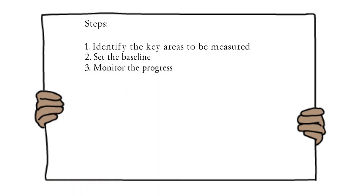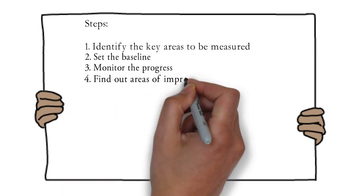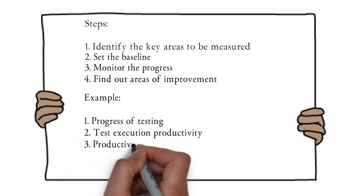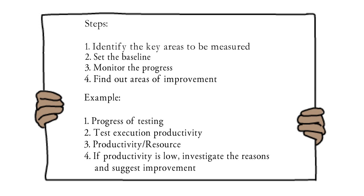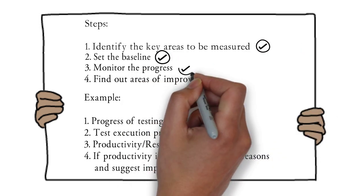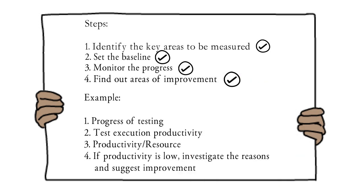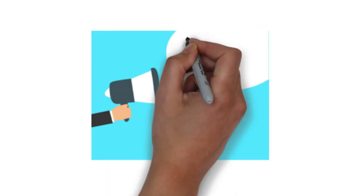The third step is to monitor the progress. The project manager or project lead should find out the productivity per resource. If productivity is low, we need to find the reasons. The fourth step is to find out areas of improvement. For example, if low productivity is due to lack of knowledge, a knowledge transfer plan can be facilitated to improve test execution.